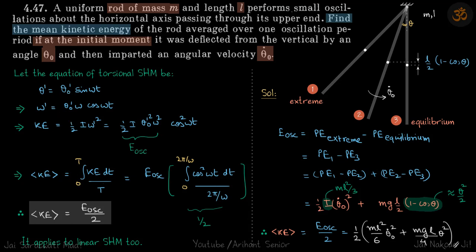So if we write these equations for linear SHM, you are going to get the same answer that average kinetic energy is E_oscillation/2. Just try it as homework. So instead of θ you will have x, instead of ω' you will have v...